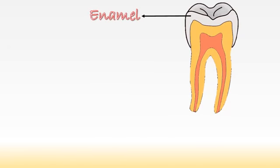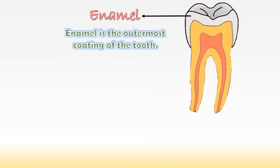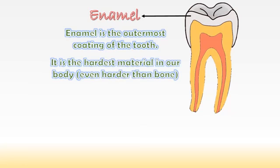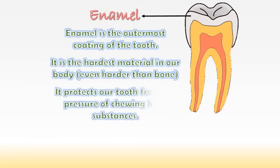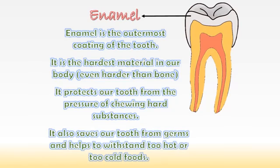Enamel is the outermost coating of the tooth. It is the hardest material in our body, even harder than bone. It protects our tooth from the pressure of chewing hard substances. It also saves our tooth from germs and helps to withstand too hot or too cold foods.